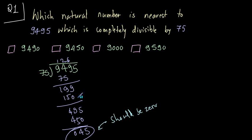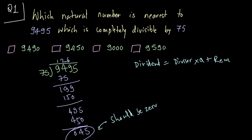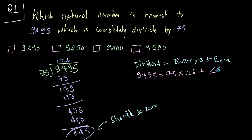Now this remainder should have been zero had 9495 been divisible by 75. To find the nearest number divisible by 75, we will use the formula: dividend equals divisor into quotient plus remainder. In this case the dividend is 9495, the divisor is 75, the quotient is 126, and the remainder is 45.